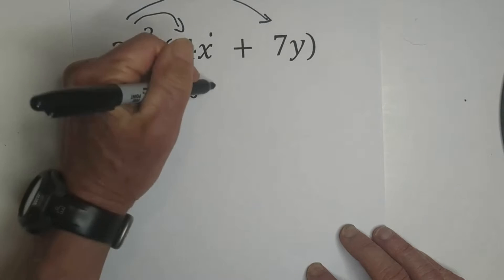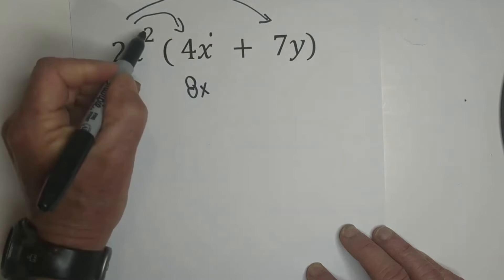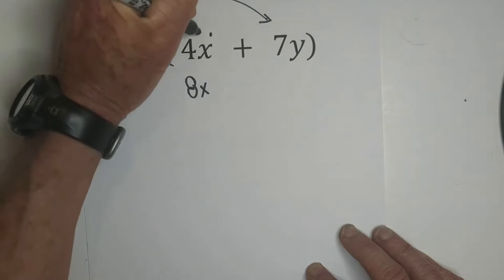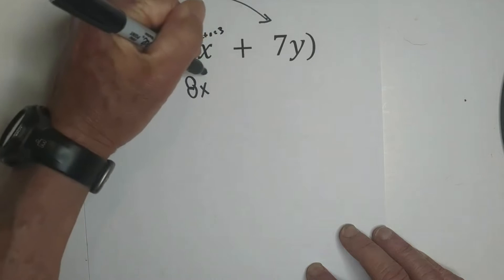We're going to bring the x over and add the exponents. So we have 2 plus 1, which equals 3.